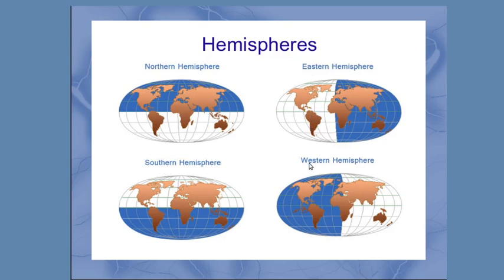In a similar way, the eastern and western hemispheres are dealing with longitude—everything that's east of the prime meridian or everything that's west of the prime meridian. That's how we can break it down into hemispheres using either the latitude or the longitude.